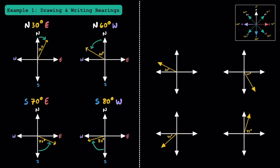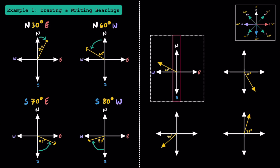Now that we've practiced drawing, let's try writing bearings. Looking at this first one, you might be tempted to use the 20 degrees you already see, but you have to be careful because the angle needs to be relative to the north and south axis. While this bearing is 20 degrees from the west, we say it's 70 degrees from the north. When writing a bearing, always start with north or south first, then write the angle — 70 degrees from the north — then write east or west. In this problem we're going towards the west, so this bearing is north 70 degrees west.